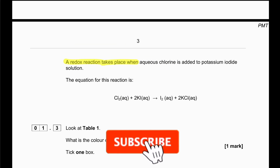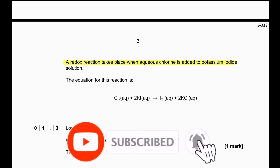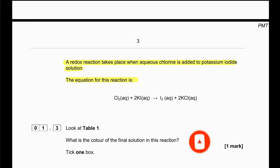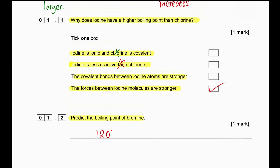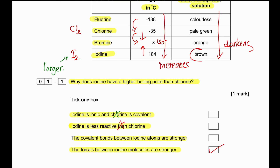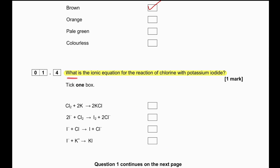A redox reaction takes place when aqueous chlorine is added to potassium iodide solution. The equation is: chlorine plus potassium iodide produces iodine plus potassium chloride. The color of the final solution will be brown, because we are producing iodine and iodine in aqueous solution has a brown color.